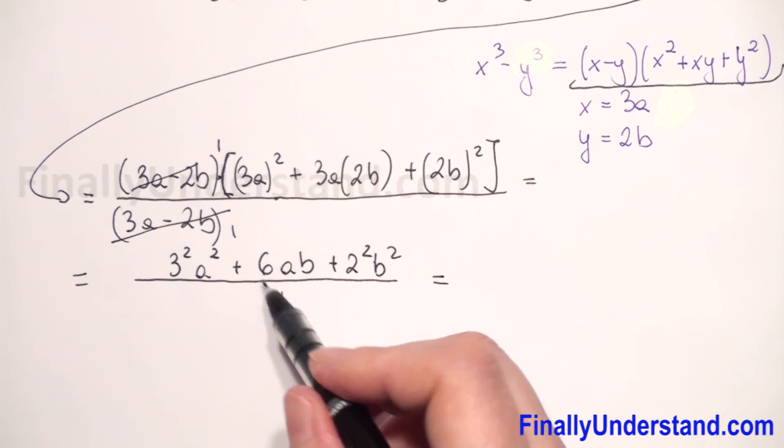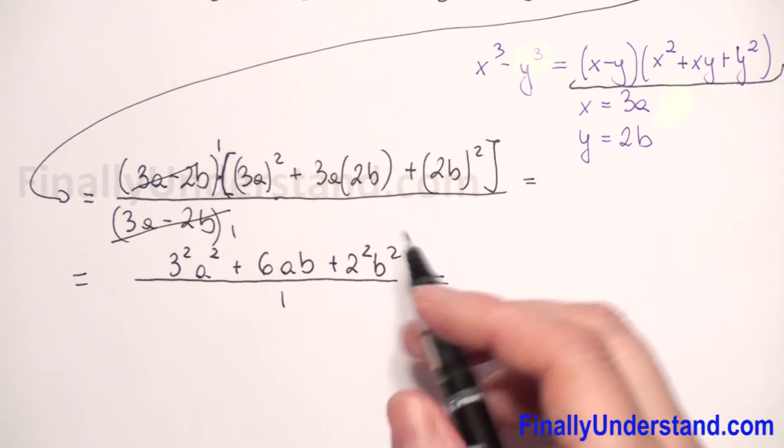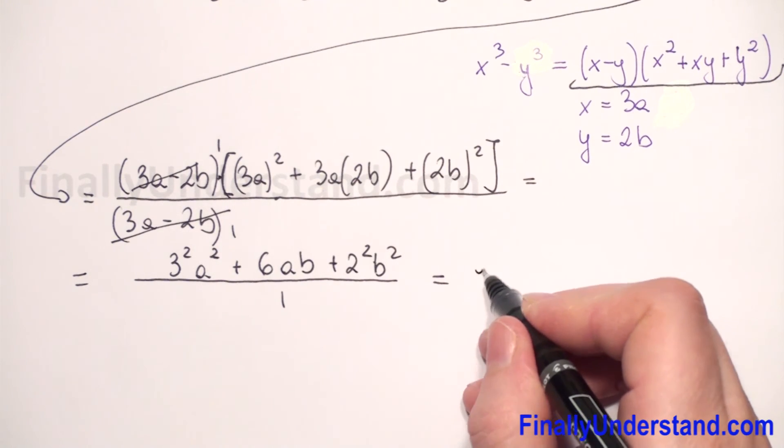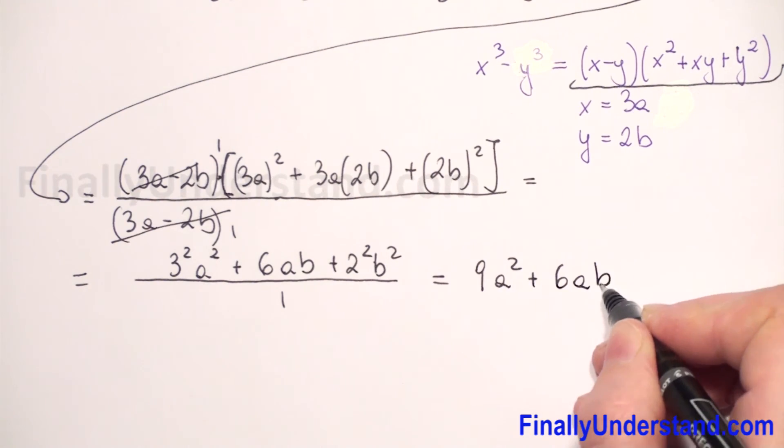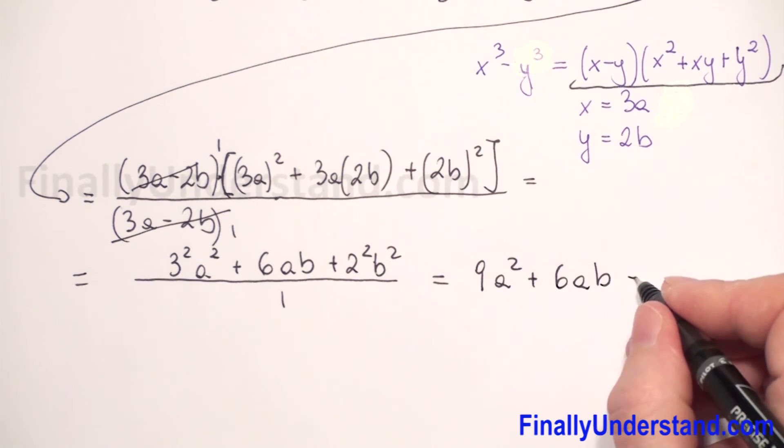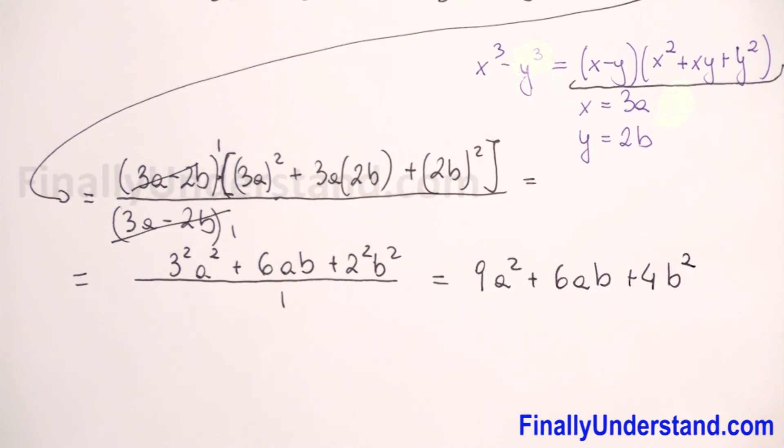And we have over 1. When we divide by 1, it is still the same expression, so we don't have to write. So we have 3 to 2nd power is 9a² plus 6ab and 2 to 2nd power is 4 and b², we copy. This is my solution.